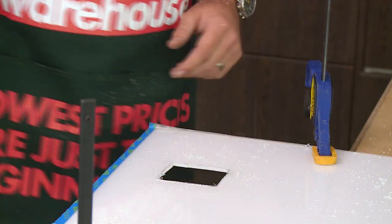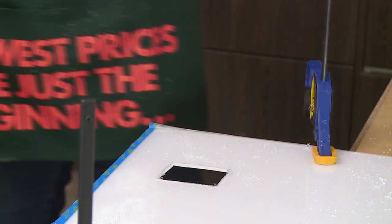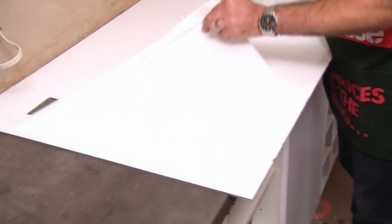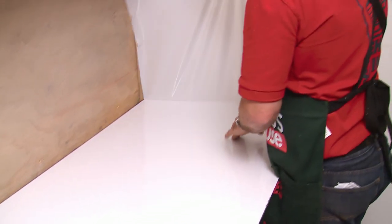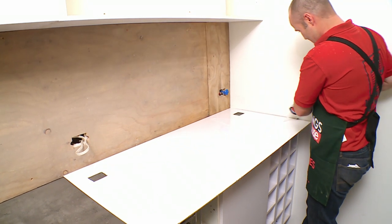Now we're going to check that the power points are spot on, and then we'll fix the splashback to the wall. Now I know everything's correct, I'm going to peel back the plastic off the back and put some silicone on and fix it into place.